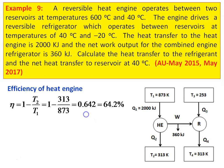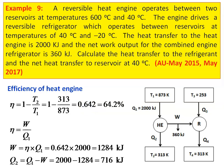Efficiency of the heat engine: eta equals 1 minus T2 by T1 equals 1 minus 313 divided by 873 equals 0.642, which is 64.2%. Eta is also equal to W by Q1, so work output of the heat engine W equals eta into Q1 equals 0.642 into 2000 equals 1284 kilojoules. W equals Q1 minus Q2, so Q2 equals Q1 minus W equals 2000 minus 1284 equals 716 kilojoules.